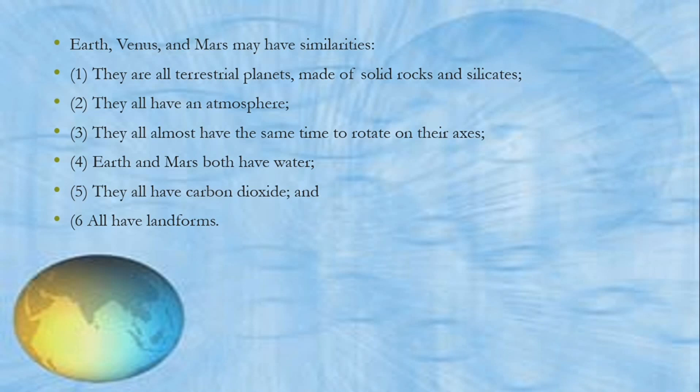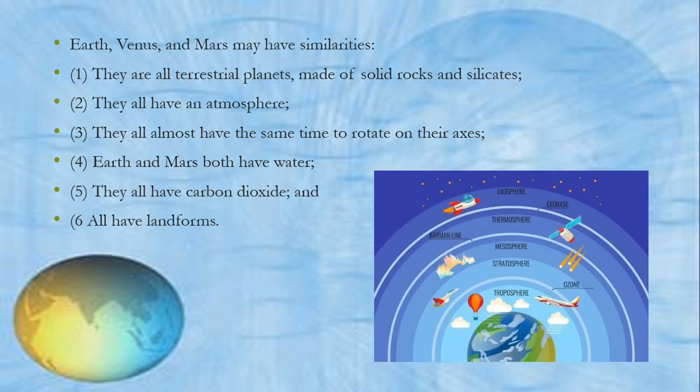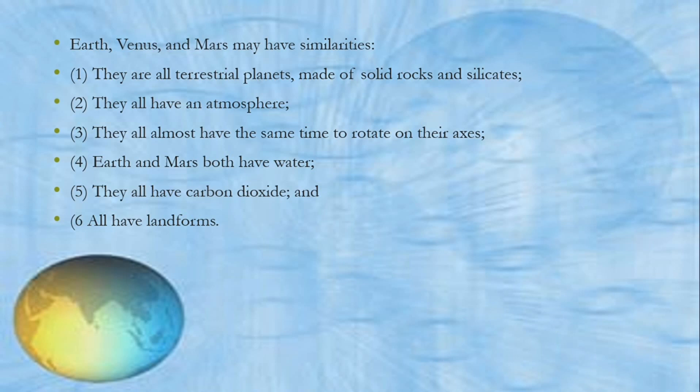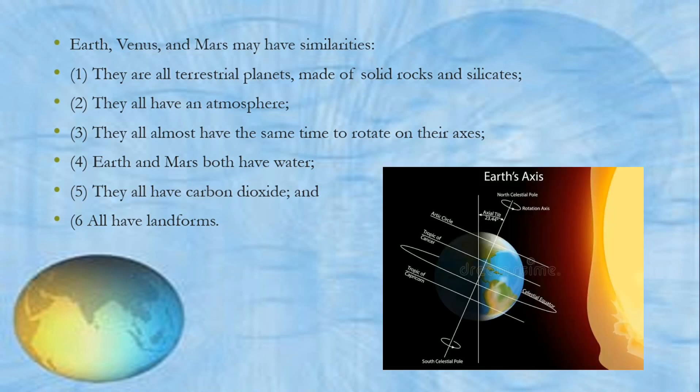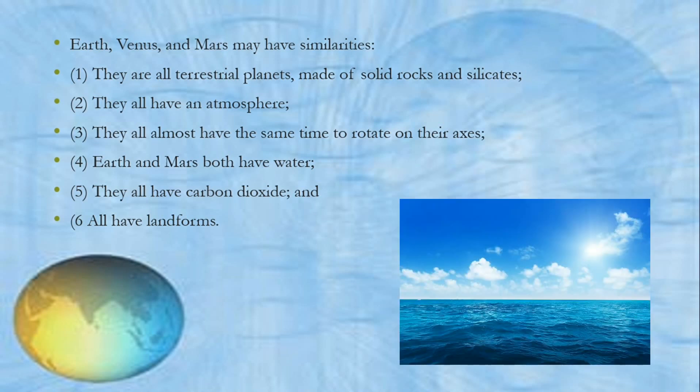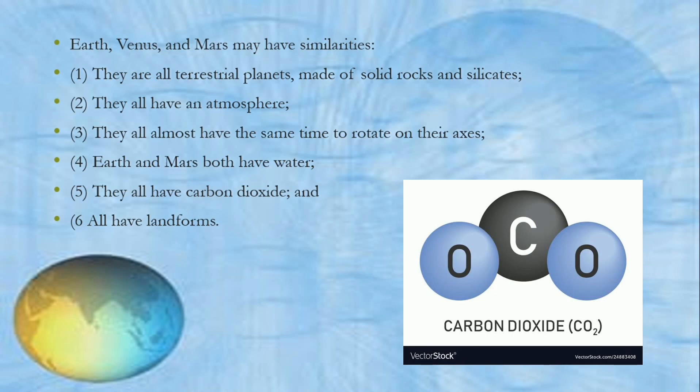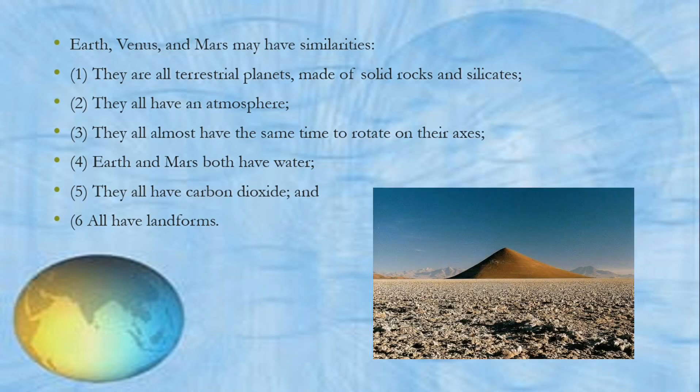Earth, Venus, and Mars may have similarities. First, they are all terrestrial planets made of solid rocks and silicates. Second, they all have an atmosphere. Third, they all almost have the same time to rotate on their axis. Fourth, Earth and Mars both have water. Fifth, they all have carbon dioxide, and lastly, all have landforms.